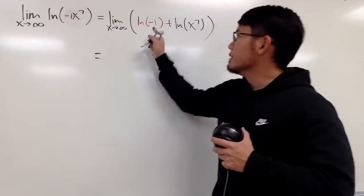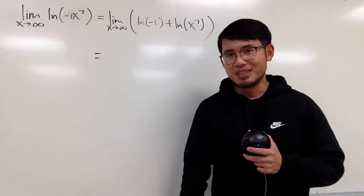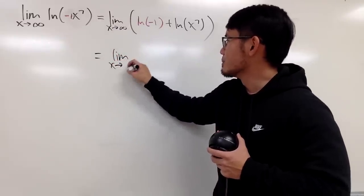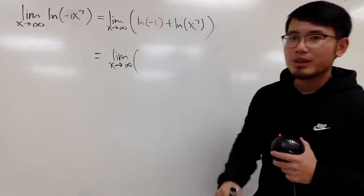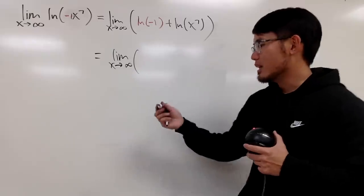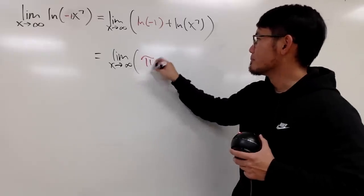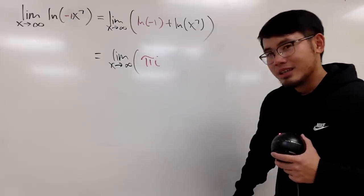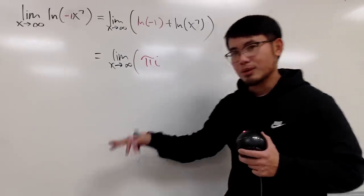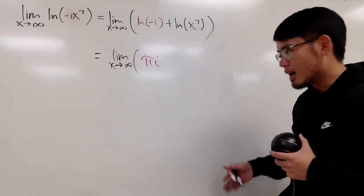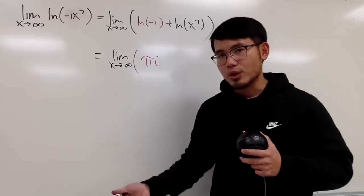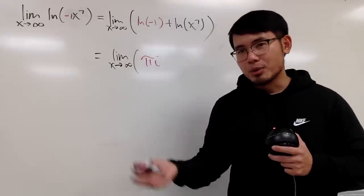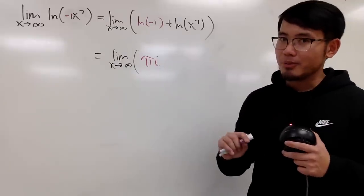This is the part where we go to the complex world. The limit as x goes to positive infinity — you can check my other videos — the answer to ln of negative 1 is πi. This is the principal value of ln(-1). You also have 3πi, 5πi, and so on, and negative versions of them as well. Technically you have infinitely many answers: the odd multiples of πi. But let me just put down one answer here.